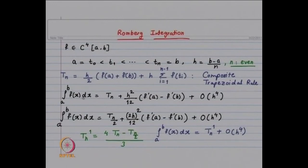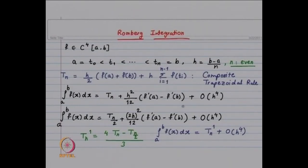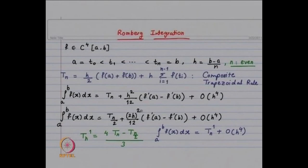The integral from a to b of f(x) dx equals Tₙ plus a term h²/12 · (f′(a) − f′(b)) plus terms of order h⁴. The term f′(a) − f′(b)/12 is independent of the partition. Now consider the composite trapezoidal rule with sub-interval length 2h and n/2 sub-intervals: the integral equals Tₙ/₂ plus (2h)²/12 · (f′(a) − f′(b)) plus terms of order h⁴.